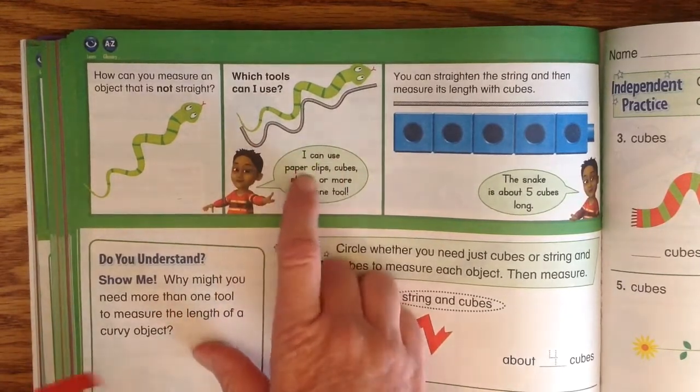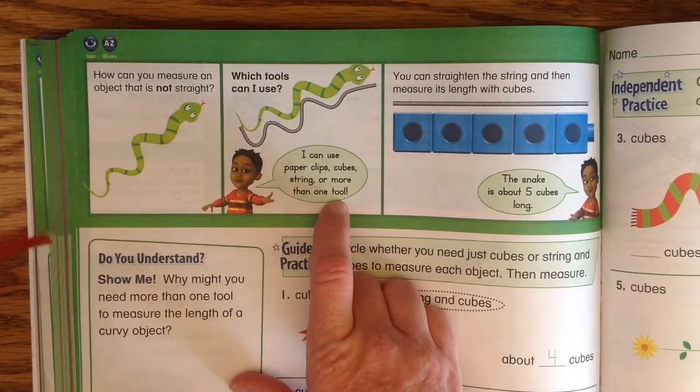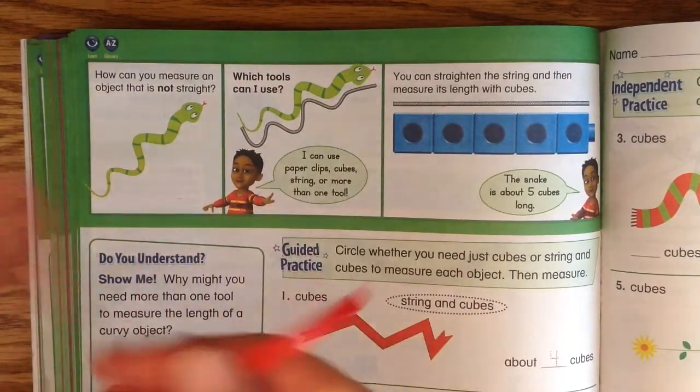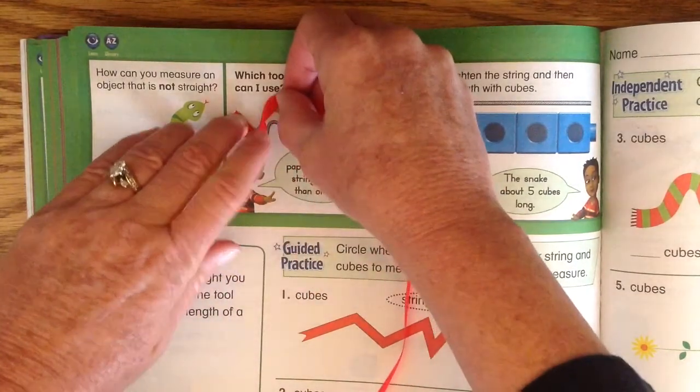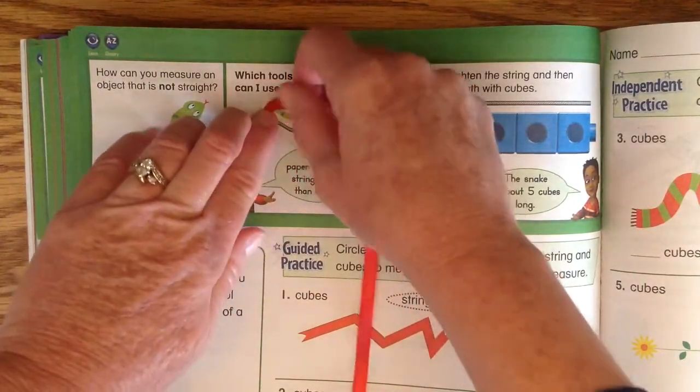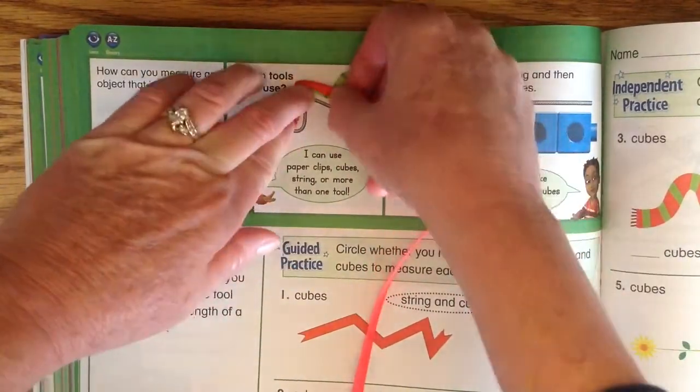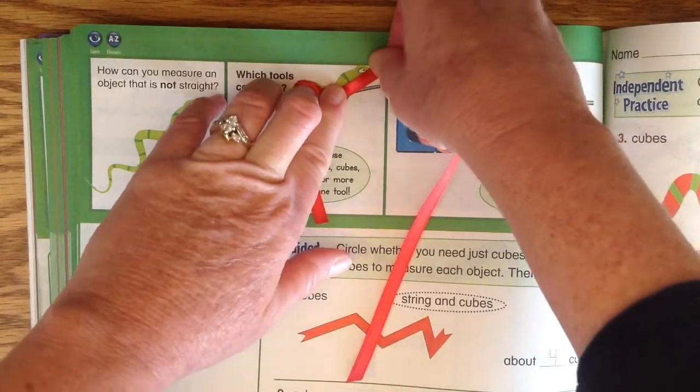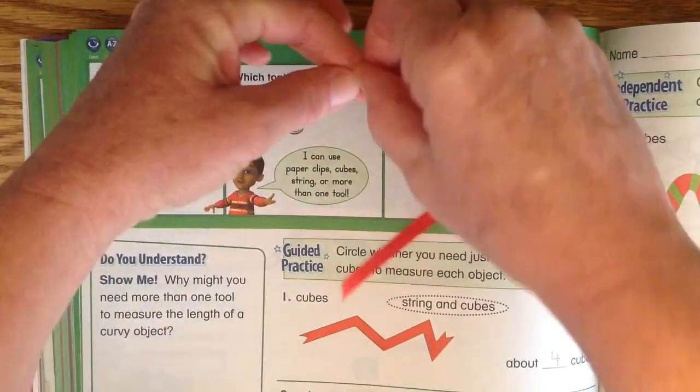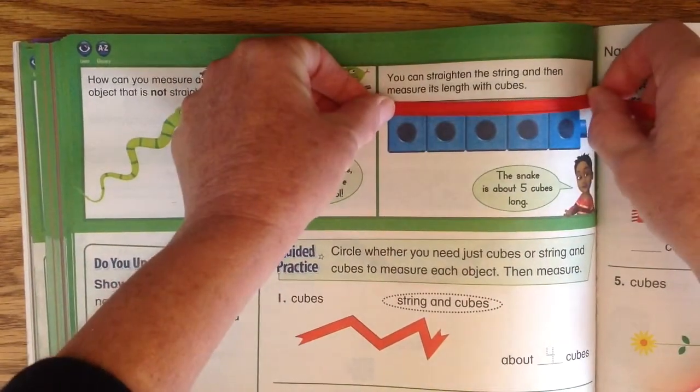Well I can use paperclips, cubes, string, or more than one tool. For something that's moving around I might want to use a string and I could just move it along with it. See how I'm just going right across, right around, and I'm at the end of the snake. When I straighten the string out, the snake is that long.